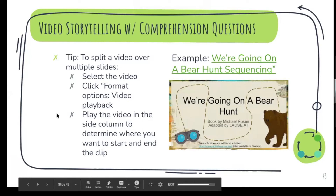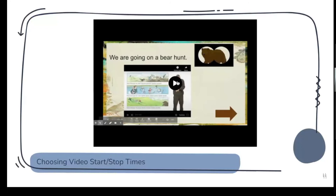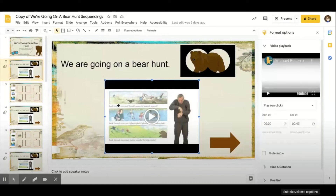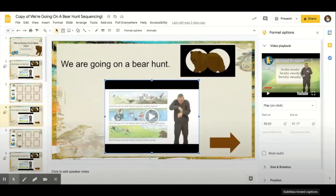Now let's pivot to videos. YouTube videos tend to be long — even a five-minute video is long for a five-year-old. A great feature in Google Slides is the ability to set the start and stop time of each video. When using video as instruction, it's helpful to break it up over multiple slides so you can build in opportunities for discussion and comprehension questions. In this example, a video ends at 43 seconds, then there's a graphic organizer to fill out, and the next slide picks up at 43 seconds and goes a little farther.